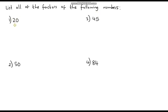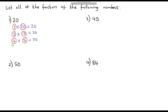So 20. Well if we start off at 1, then 1 times 20 is 20. Now 2: 2 times 10 also gives us 20. Now 3 is not a factor of 20. 4 is a factor and 4 times 5 is 20. And now is 5 a factor? Well we've already figured out that 5 is a factor because 4 times 5 is 20, so we can stop — we've come back to where we started. The factors of 20 are: 1, 2, 4, 5, 10, and 20.